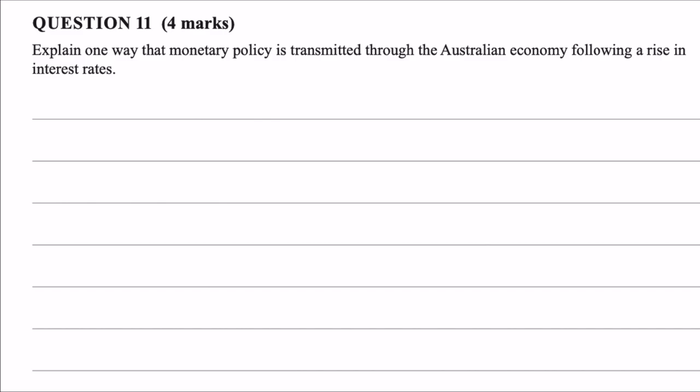Our cognitive verb: explain. We've only got to look at one way monetary policy is transmitted, but we're starting to see that we're going to look at the four channels of the monetary policy transmission. Australian economy, not focusing on the global position. And importantly, it's a rise in interest rates. This is what we have to really focus on.